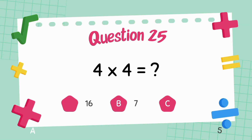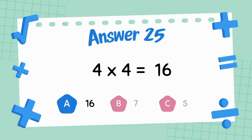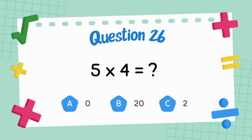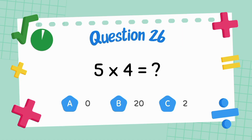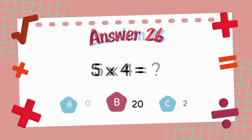What is four multiply four? The answer is sixteen. What is five multiply four? The answer is twenty.